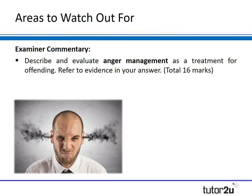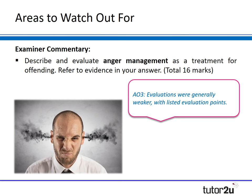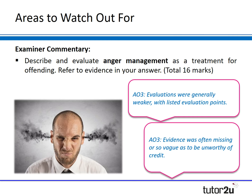For the second question — 'Describe and evaluate anger management as a treatment for offending and refer to evidence in your answer' — there were AO3 points that examiners commented on: evaluations were generally weaker and students just listed their evaluation points. In some cases, evidence within the evaluation was missing altogether and therefore so vague it was not creditworthy. Students, even if making generic evaluation points, still need to include evidence or examples within them to make them effective points.